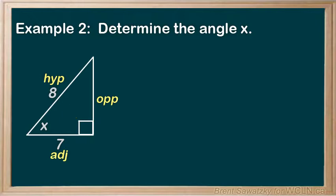And the leftover side here would be the opposite. Now, our goal here is to solve for the X. So we have to include the X in our trig ratio. And we can't have any other unknowns.